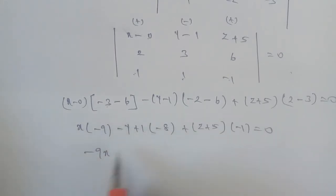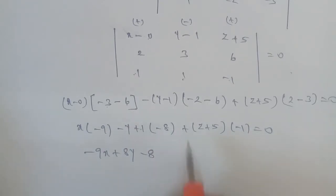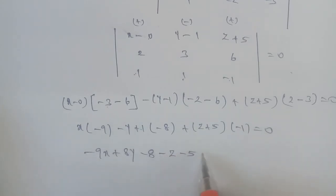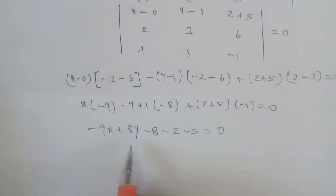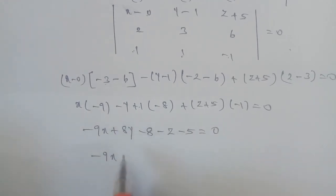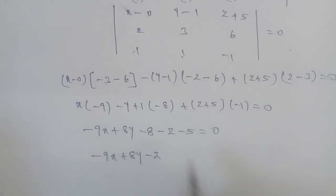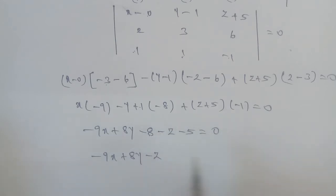Computing: x times (minus 3 minus 6) gives minus 9x. Minus (y minus 1) times (minus 2 minus 6) gives minus(y minus 1)(minus 8), which is minus 8(y minus 1), so minus 8y plus 8. Plus (z plus 5) times (2 minus 3) gives minus 1·(z plus 5), so minus z minus 5. Combining constants: 8 minus 5 gives plus 3... result equals 0.